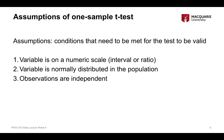The third assumption is that our observations are independent — meaning each data point comes from a separate individual, and we haven't sampled the same person twice. This is verified through the design of the study. Assumptions one and two can be tested by looking at the data and variables themselves, while assumption three is established through the study design.